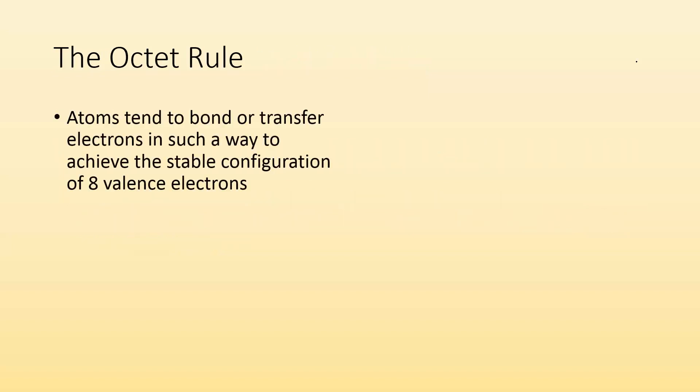Anyway, the octet rule. Atoms tend to bond or transfer electrons in such a way to achieve the stable configuration of eight valence electrons. If we looked at sodium chloride, sodium's configuration is 2-8-1 and chlorine's 2-8-7. When they bond, they transfer one electron from sodium to chlorine, and they both end up with eight valence electrons. And that's where this octet rule comes from.